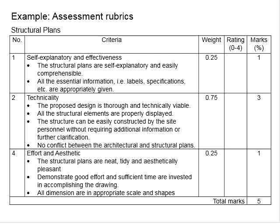First, the structural plan needs to be self-explanatory and effective. That means the structural plan needs to be standalone, covering all the necessary information that allows the contractor to build the structure without needing to refer to other sources. It should be easily comprehensible, and there should not be any ambiguity in terms of the information given in the structural plan. All the essential information such as levels, specifications, and others are appropriately given.